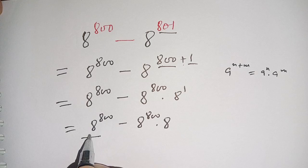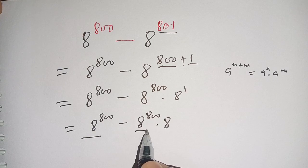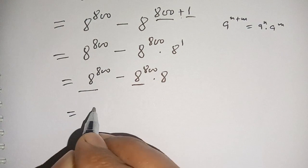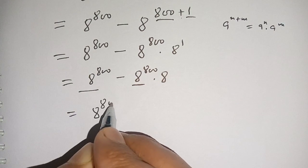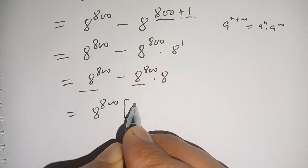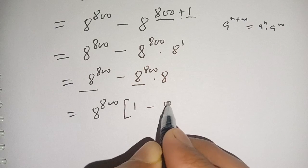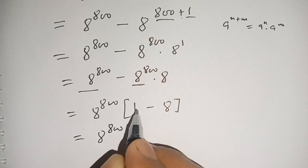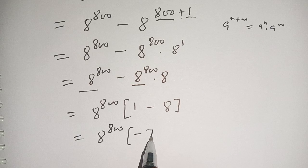From this we take out 8 power 800 from this term and from this term. We get 8 power 800, remaining here 1 minus 8. We get 8 power 800 and 1 minus 8 becomes minus 7.